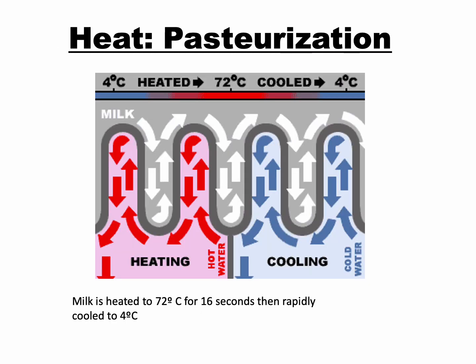Another example of heat used to reduce microbial load is pasteurization. A product — such as milk — is heated to a high temperature for a short time and then rapidly cooled. Typical milk pasteurization involves heating milk to 72 degrees Celsius for about 16 seconds, then rapidly cooling to 4 degrees Celsius. This high heat kills pathogenic microbes in the product, while the rapid cooling limits destruction of milk proteins — we want to kill pathogens without destroying the nutrient properties or taste of the milk.